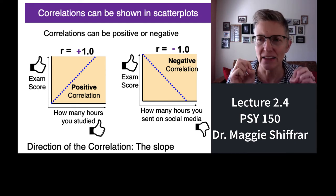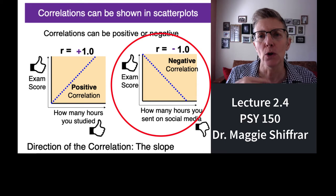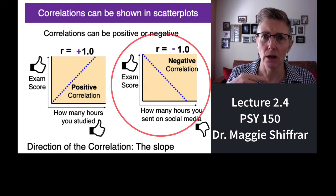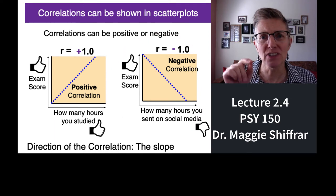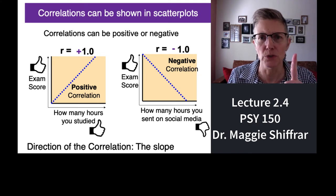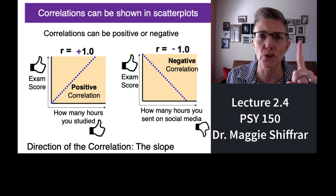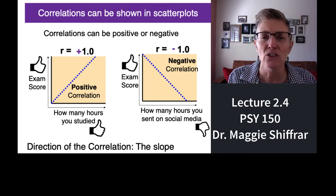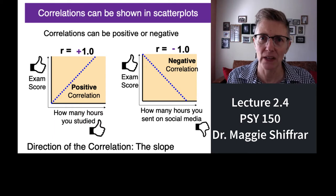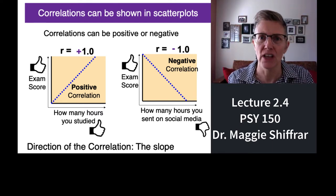The correlation is the number one because it's perfect — for each increase in hours studied there's an equal increase in exam score, so R equals plus one. In the next graph you see a negative correlation coefficient. We're looking at exam score versus time spent on social media before an exam. The dashed line points downward — as hours spent on social media increases, exam score decreases, presumably because the more you're on social media the less time you have to study. The line is perfectly straight, so the correlation is negative one.